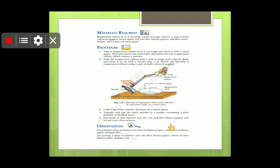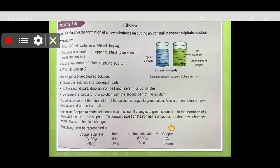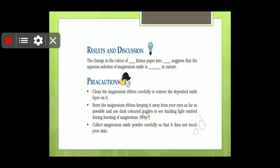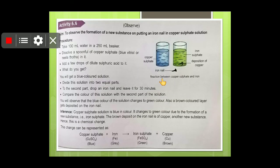So here you can see, the red litmus paper, when we put this solution on it for testing, so it will turn into blue color. That means the solution is basic in nature. So the change in the color of red litmus paper into blue suggests that the aqueous solution of magnesium oxide is basic in nature. So here are some precautions given. You can just pause the video and read these points.